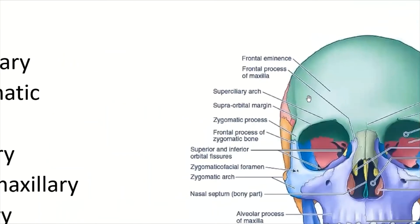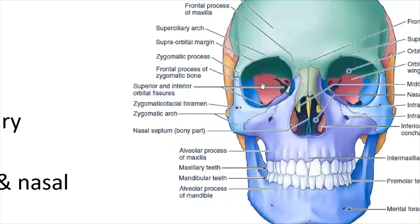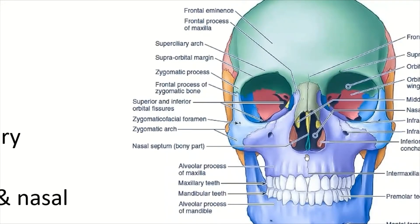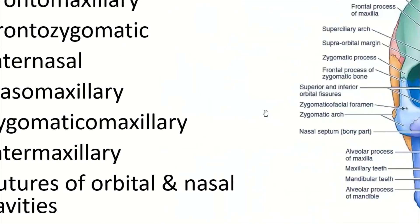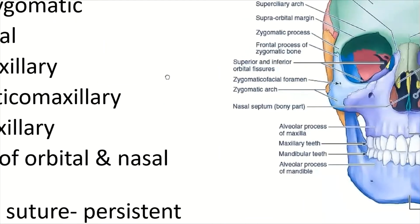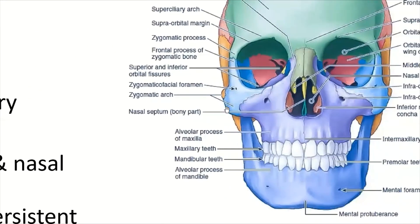Then there is the frontal-zygomatic: the frontal bone and the zygomatic bone — this is the frontal-zygomatic. Then very important are the internasal suture and the intermaxillary suture. The internasal suture is here and the intermaxillary is here — these two sutures are relatively much more important. Then is the nasal-maxillary suture between the nasal bone and the maxillary bone. Then is the zygomatico-maxillary suture.